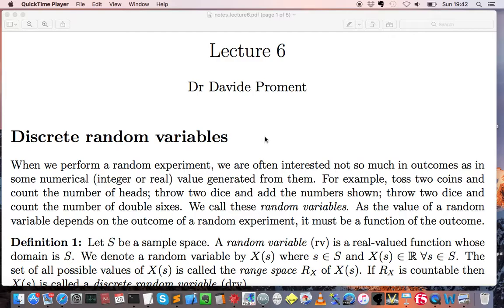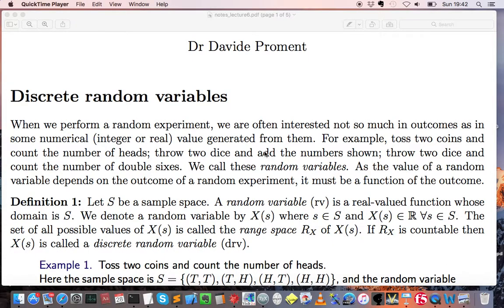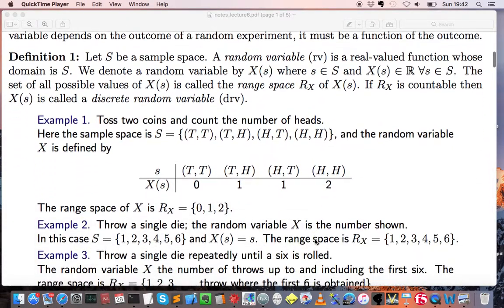We first gave the formal definition of a random variable, and specifically a discrete random variable, by introducing the real-valued function X and its range space R_X. Several examples to show the difference between the sample space and the range space were illustrated.